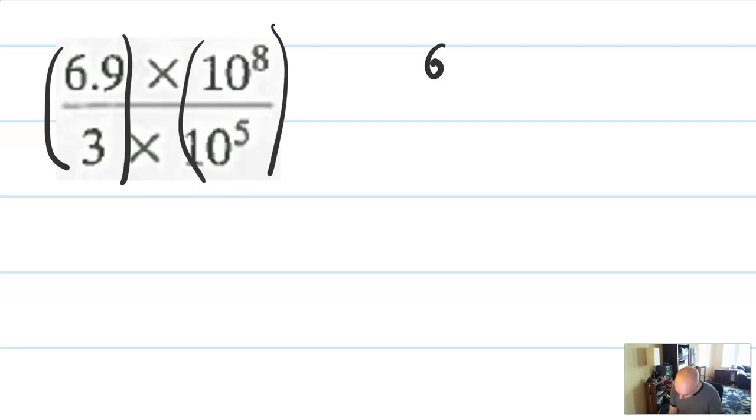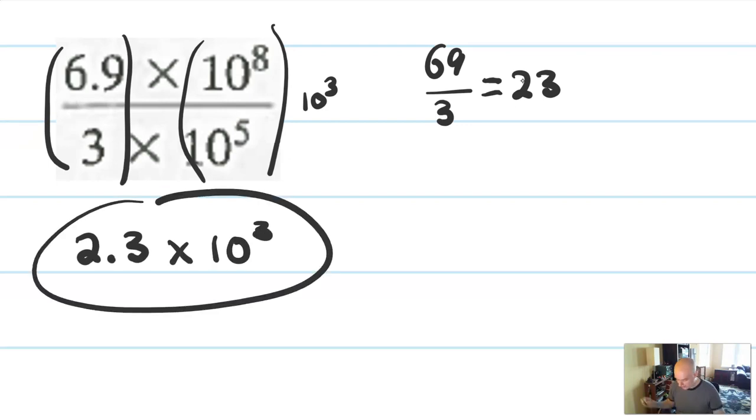We're going to group with the fraction, each part of the fraction together. 6.9 over 3, well, 69 over 3 would be, that is a number, that should be 23. So 6.9 over 3 is going to be 2.3. 10 to the 8th over 10 to the 5th, that's going to be 10 to the 3rd. So this is going to be 2.3 times 10 to the 3rd, and you're done. But don't write out the zeros, that's silly. Oh, you should check that the 2.3 is proper scientific notation. But in this case, it is, so you're fine.